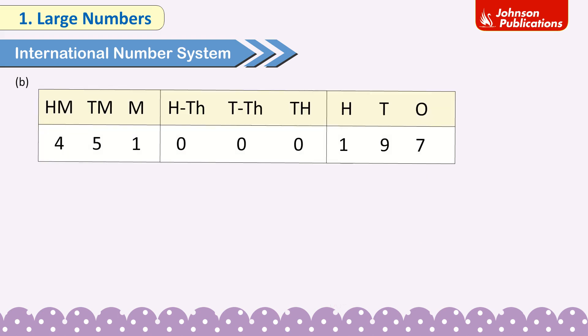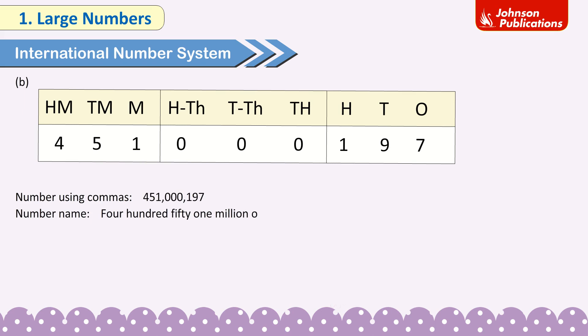B. 45,100,197 — placing digits: HM=4, TM=5, M=1, HTH=0, TTH=0, TH=0, H=1, T=9, O=7. Number using commas: 45,100,197. Number name: forty-five million one hundred thousand one hundred ninety-seven.